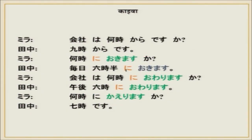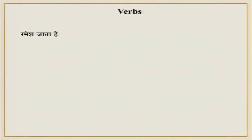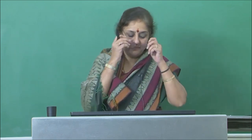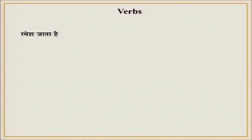First, let us understand what verbs are. Verb is a very important part of our sentence. From it we know what the person — our subject — is doing: where they are going, what they are eating, at what time they are eating, or whether they are eating or not eating.